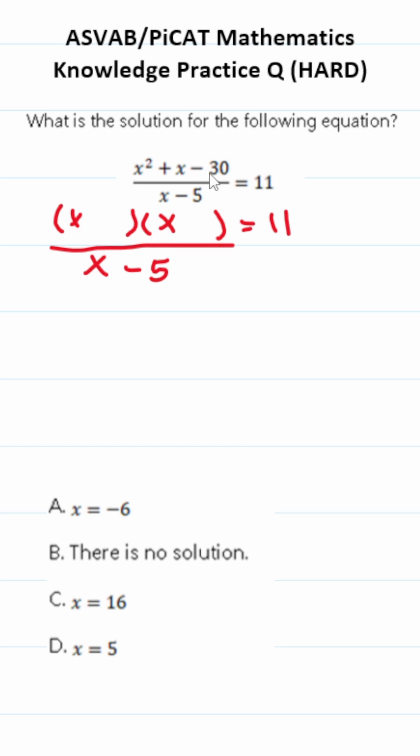We're looking for two numbers that multiply to negative 30 but add to positive 1. That's going to be minus 5 and plus 6. This enables us to cross this out and in doing so, this becomes x plus 6 equals 11.